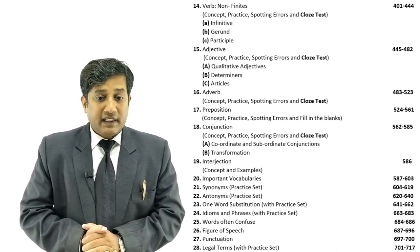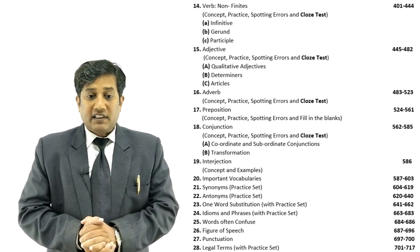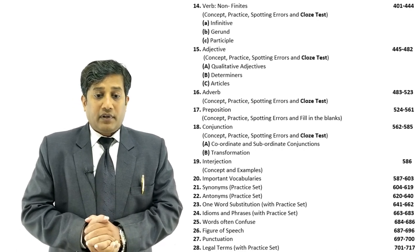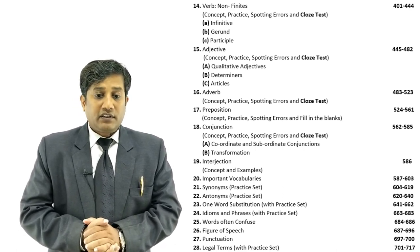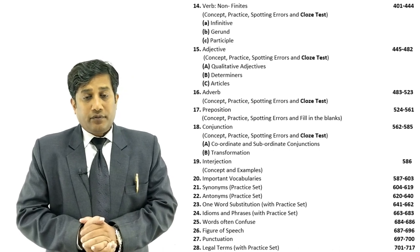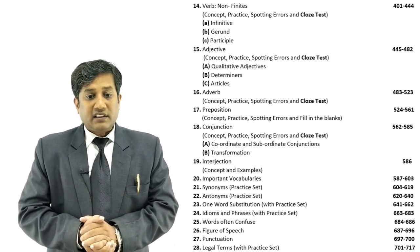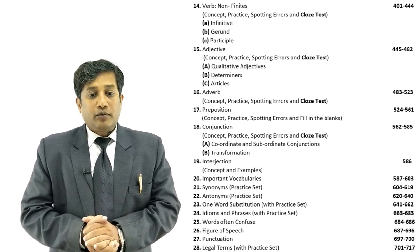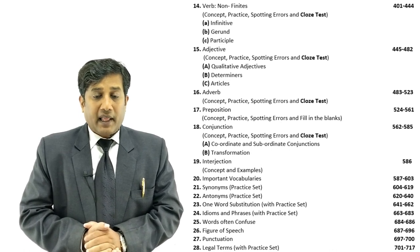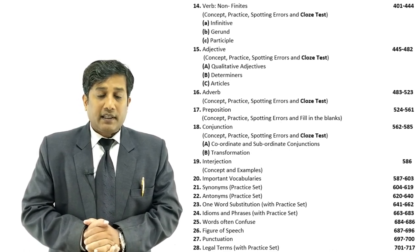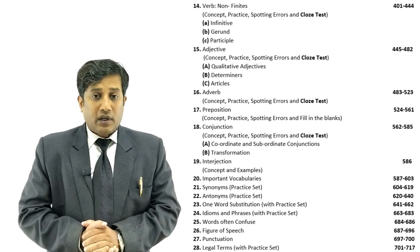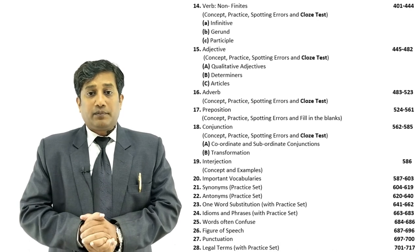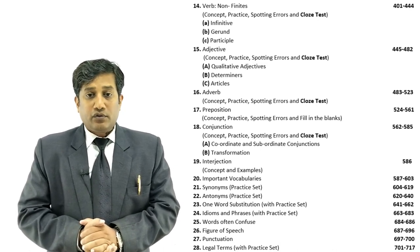Next, important Vocabularies are provided: Synonyms based on practice sets, then Antonyms also based on practice sets. The 23rd topic is One Word Substitution. The 24th topic is Idioms and Phrases with practice sets. The 25th topic is Words Often Confused — a complete list is provided. The 26th topic is Figure of Speech, because many competitions include figure of speech questions, so it will be very helpful for students to prepare it from this book.